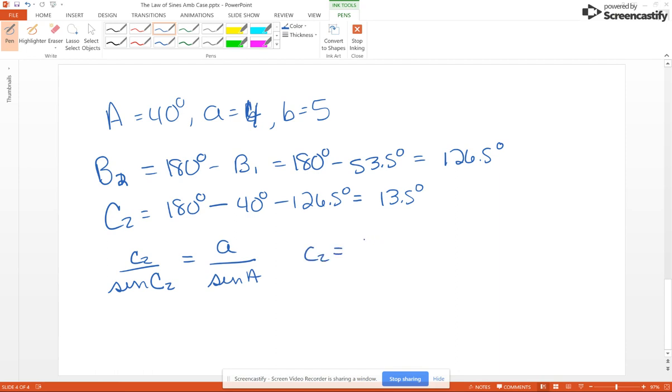And then side C2, you find the same way as you did before, and you get C2 is going to be 4 sine of 13.5 degrees over sine of 40, and that becomes 1.5. So as you can see, the second triangle is much easier to find.